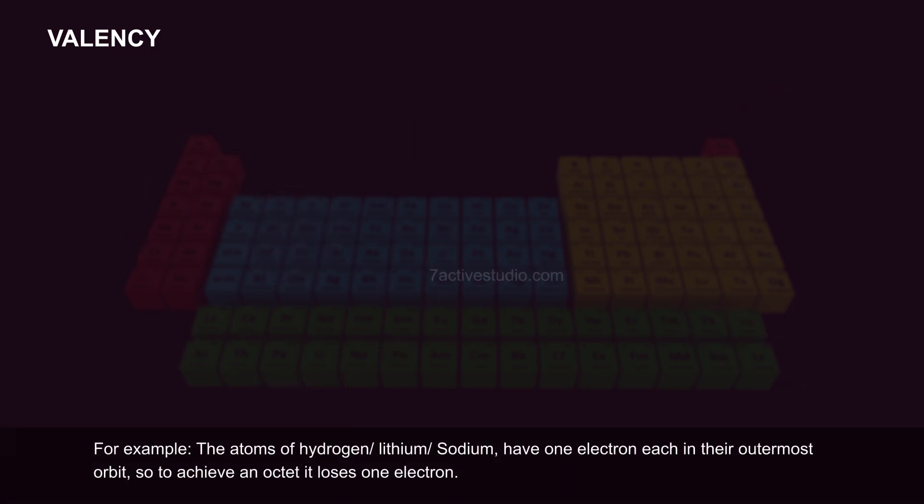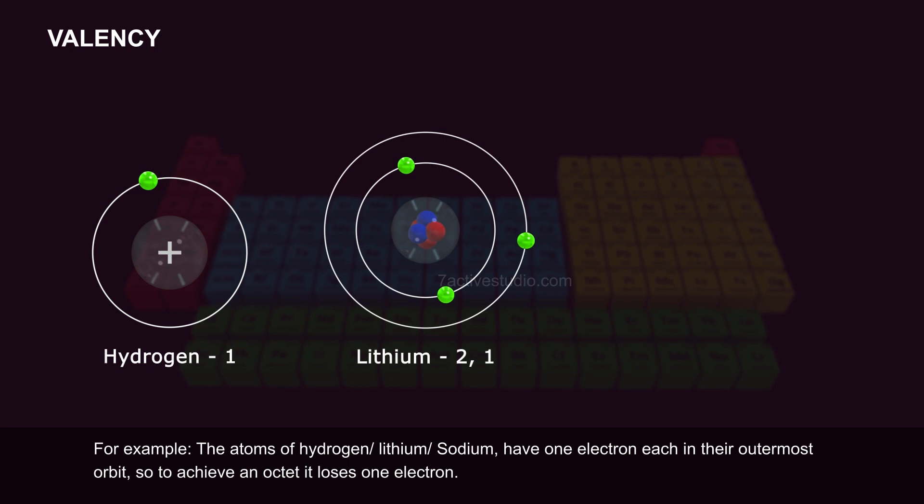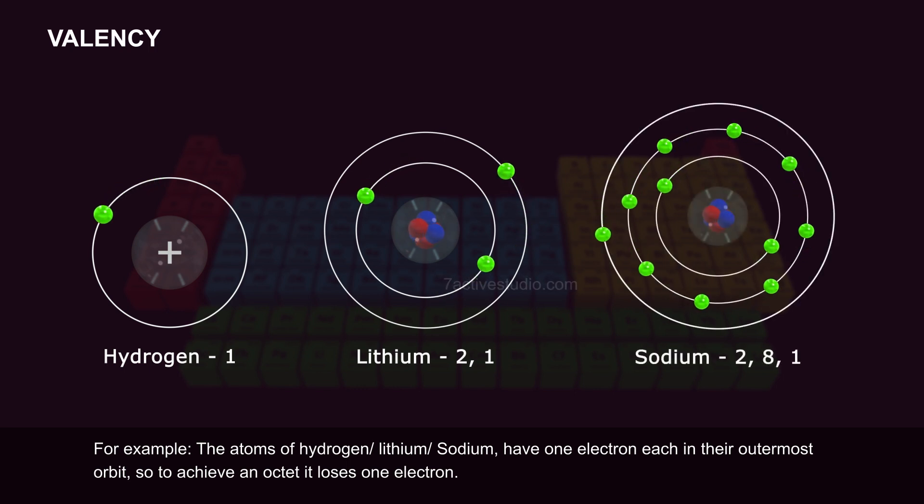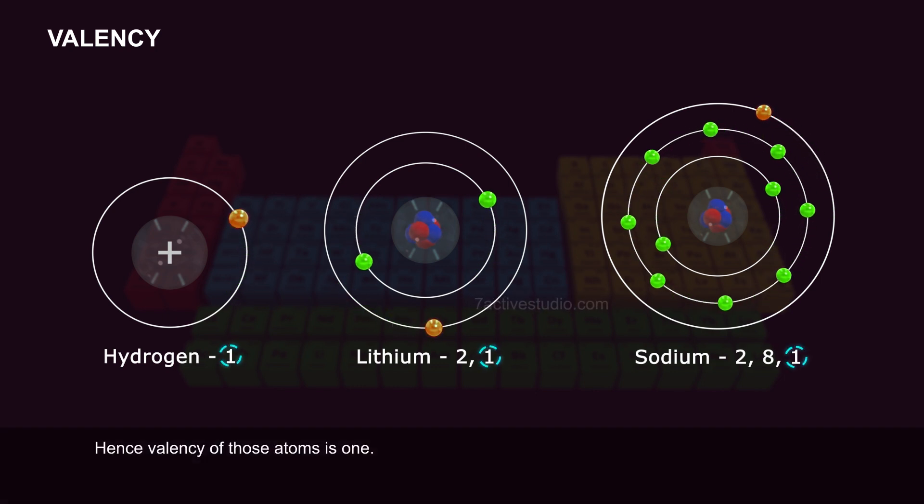For example, the atoms of hydrogen, lithium, and sodium have one electron each in their outermost orbit. So to achieve an octet, each loses one electron. Hence, the valency of those atoms is 1.